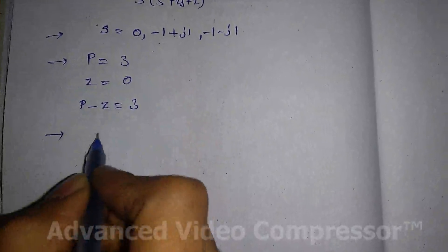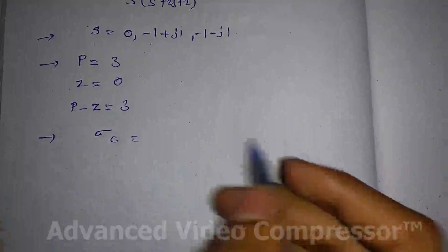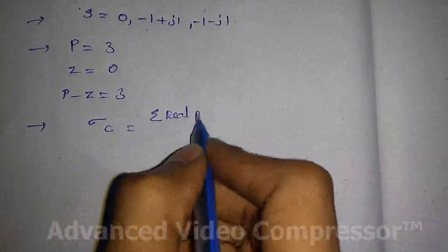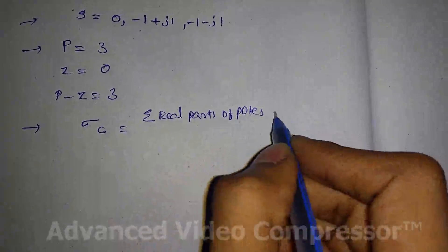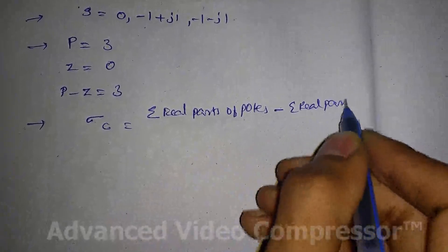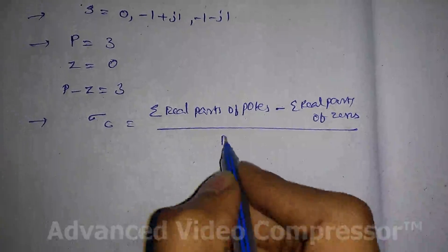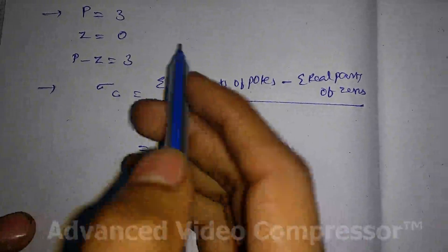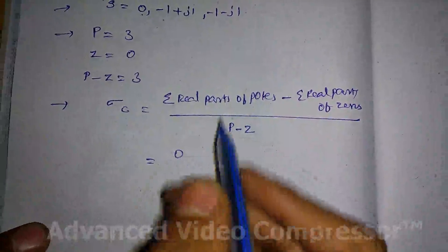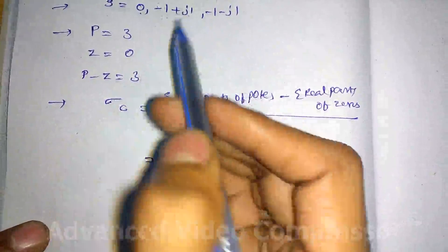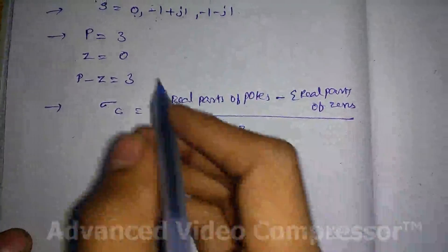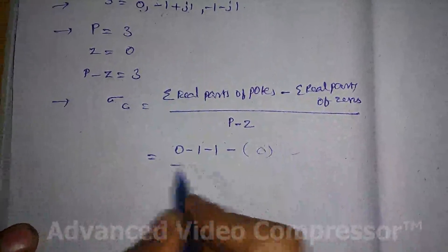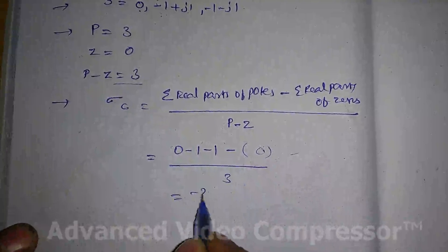Now find the centroid, denoted by σ_c. The formula for centroid is: summation of real parts of poles minus summation of real parts of zeros, divided by P minus Z. The real parts of the poles are 0, −1, and −1. There are no zeros, so that term is zero. Thus the centroid is −2/3.